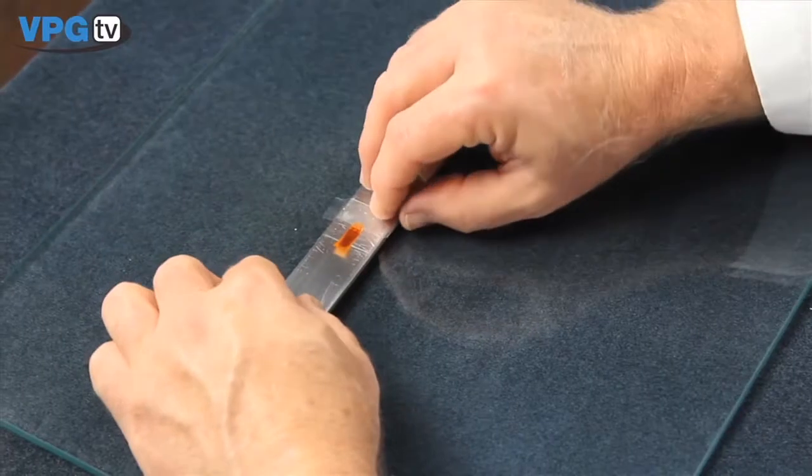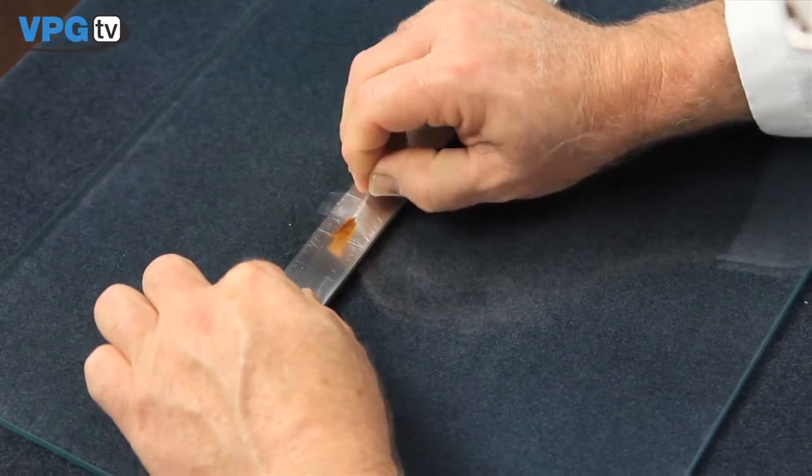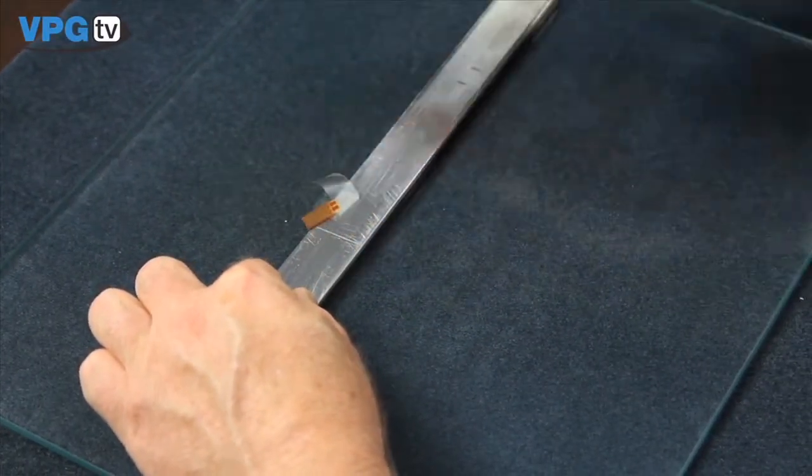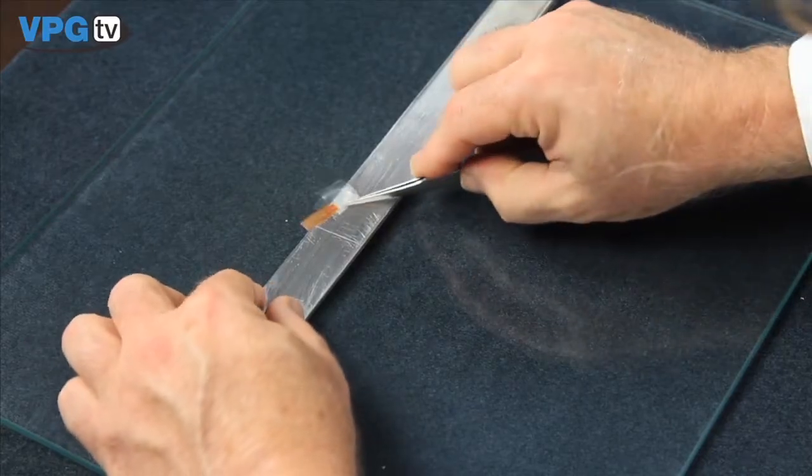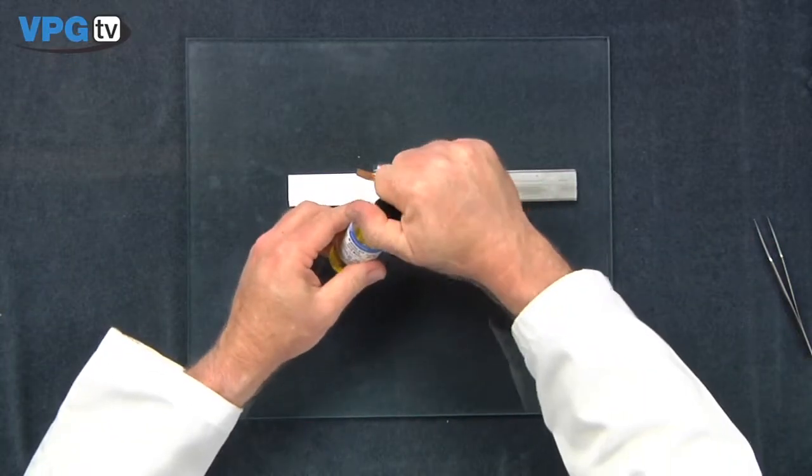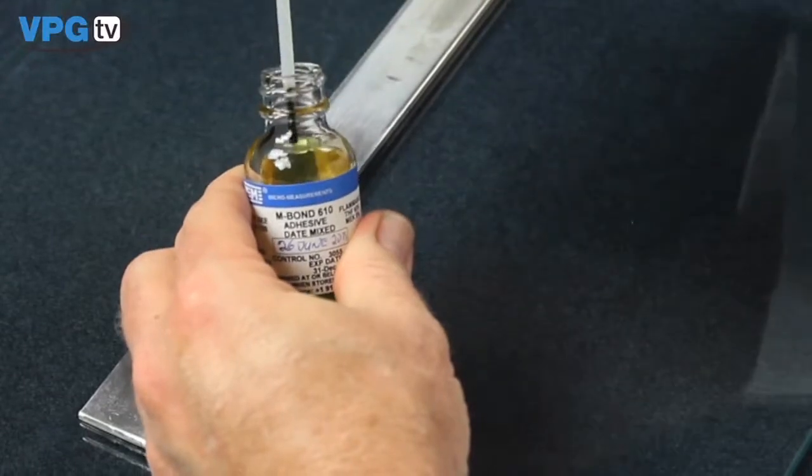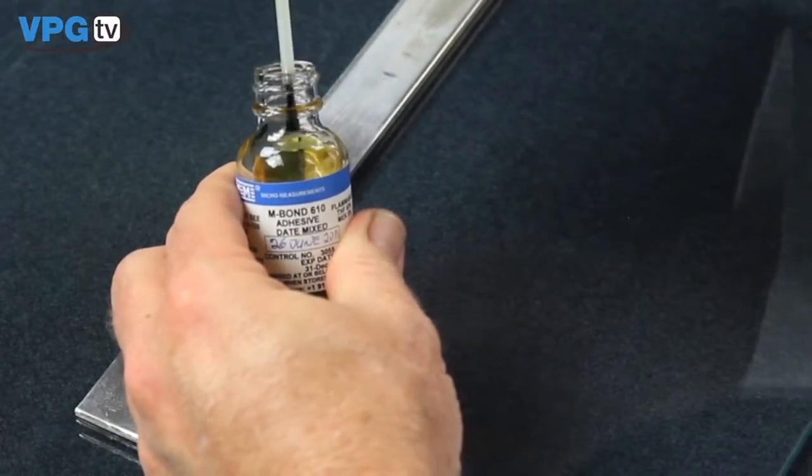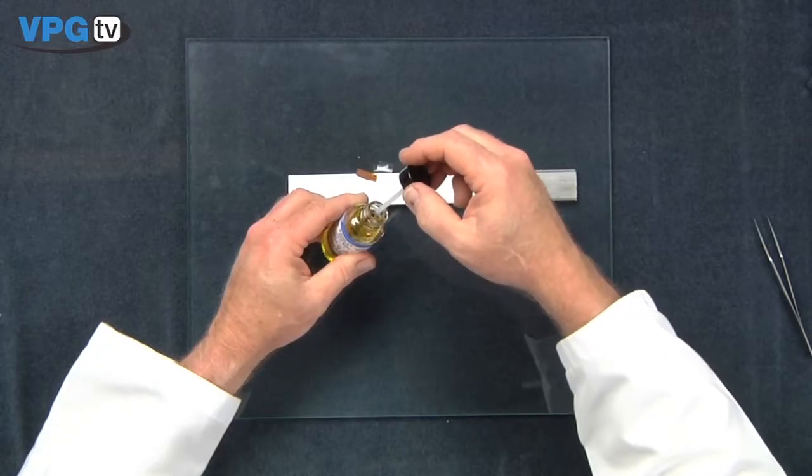Step three is the adhesive application. Next, we will lift the gauge handling tape to expose the bonding side of the gauge. Carefully remove excess adhesive from the brush by wiping several times on the inside of the neck of the bottle. Do not wipe the excess on the lip.